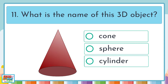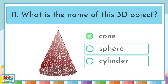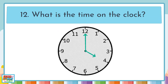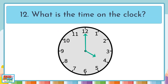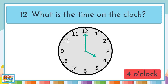Question 11. What is the name of this 3D object? A cone, a sphere, or a cylinder? It's a cone. Question 12. What is the time on the clock? 4 o'clock.